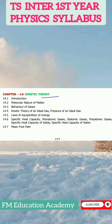Chapter 14, Kinetic Theory: Introduction, molecular nature of matter, behavior of gases, kinetic theory of ideal gas, pressure of an ideal gas, law of equipartition of energy, specific heat capacity, monatomic gases, diatomic gases, polyatomic gases, specific heat capacity of solids, specific heat capacity of water, and mean free path. So these are the 14 chapters of intermediate physics first year.